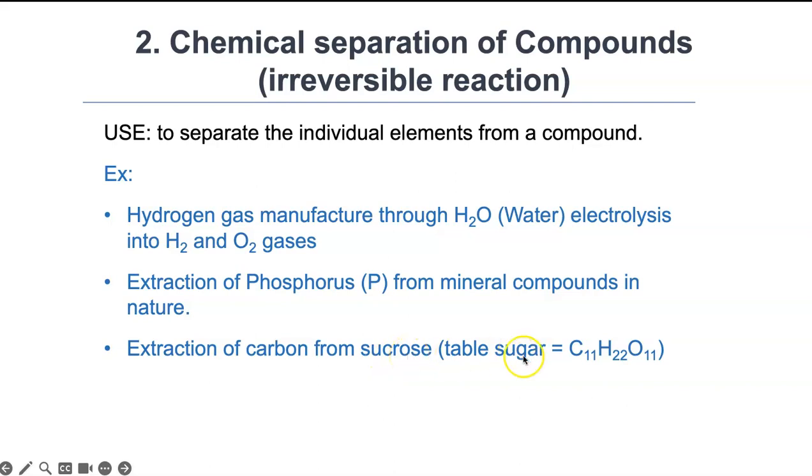Another one we can do in the lab: you take sucrose or table sugar, which is carbon, hydrogen, and oxygen in this formula. You can get rid of the hydrogen and oxygen in the form of water—they just evaporate out—and you can have pure carbon. So your sugar will turn pure black. To do this, you add concentrated acid, which will hydrolyze—break down—the sugar into water, and all you have remaining is carbon. These are only a few examples; there are a lot more other ways.